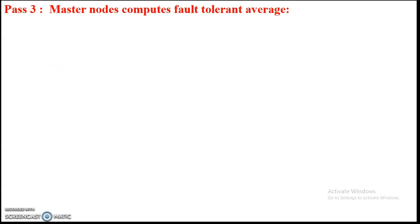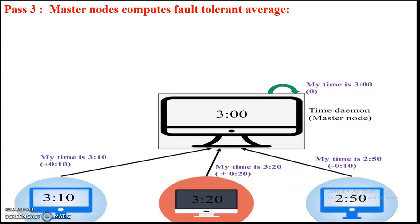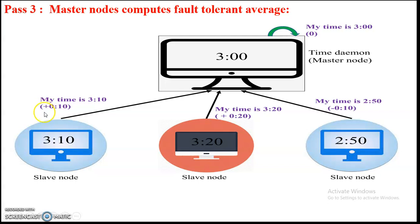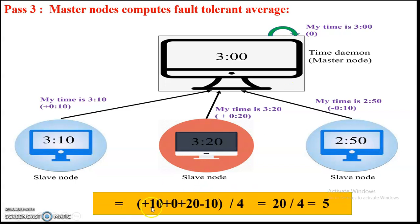In step 3, the master node computes the fault-tolerant average. The differences are: slave node 1 is +10 minutes ahead, slave node 2 is +20 minutes ahead, slave node 3 is −10 minutes behind, and the master itself is 0. We add these up: +10 + 20 − 10 + 0 = 20, then divide by 4 (the number of nodes). So 20 ÷ 4 = 5 minutes — meaning we need a 5-minute adjustment.